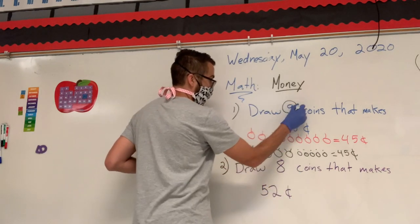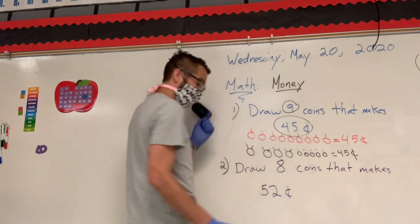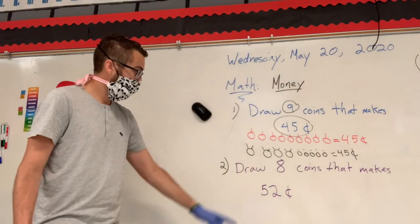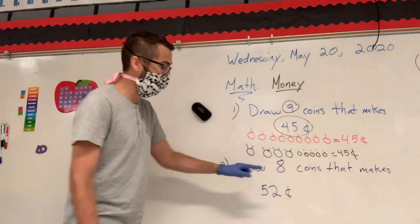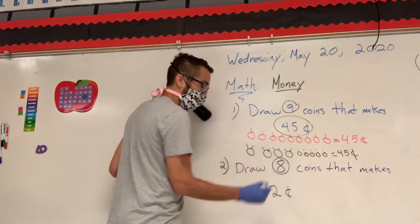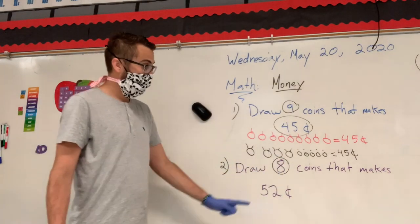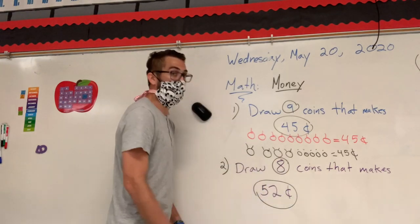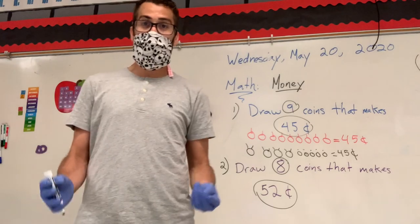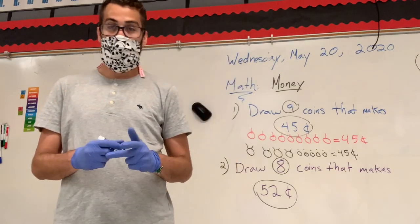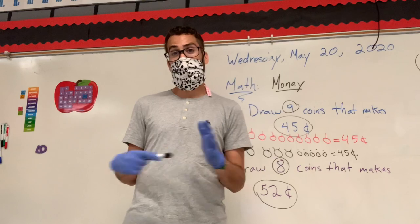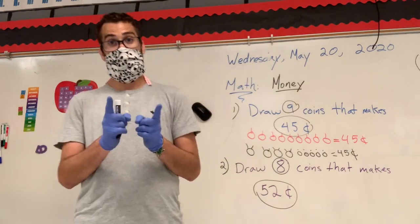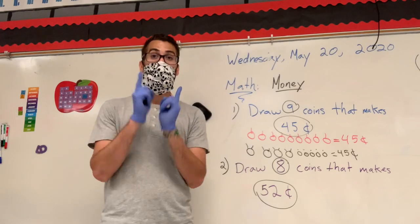We drew nine coins and made 45 cents. Now today you're going to do the same process, but you're going to draw eight coins — ocho monedas — that make 52 cents. Ocho monedas que hagan 52 centavos. There may be different ways; what's important is that you use only eight coins.